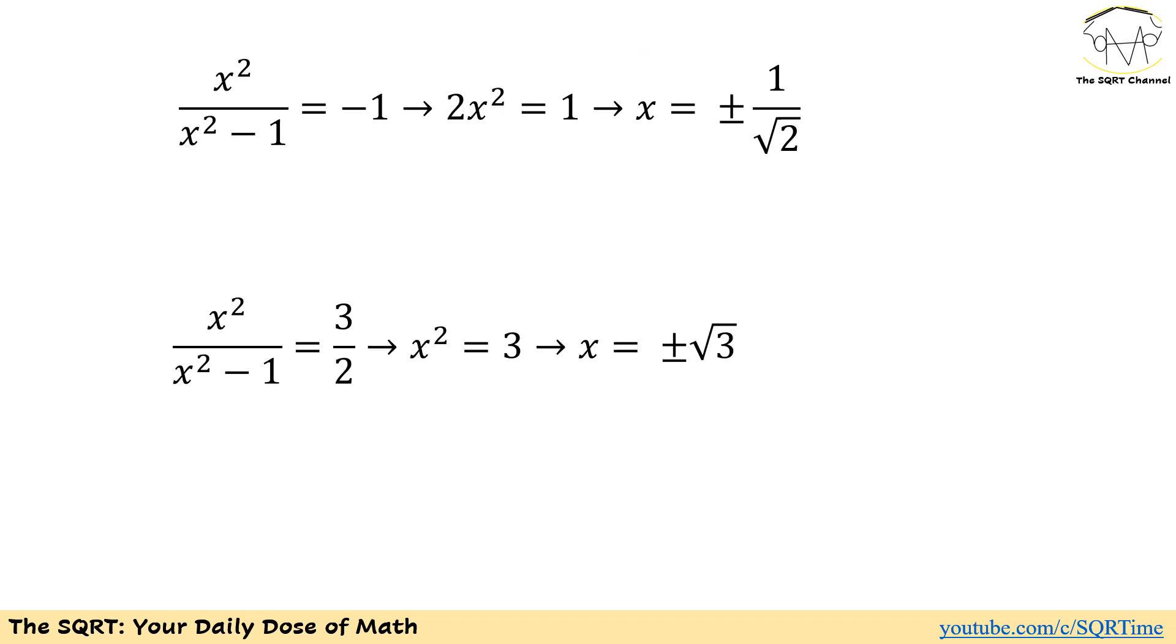Now let's put x to the power of 2 over x squared minus 1 as negative 1 and 3 over 2. For the first case if we simplify it we can see that 2 times x squared is going to be 1. So x can be plus minus 1 over square root of 2.